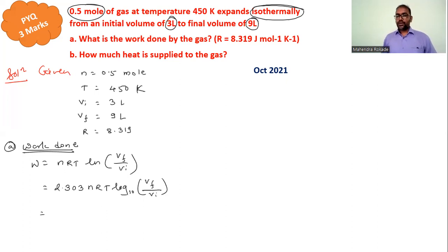Now we have to substitute the values and solve it. So 2.303 multiplied by n is 0.5, R is 8.319, T is 450, then log base 10 of Vf is 9 and Vi is 3.